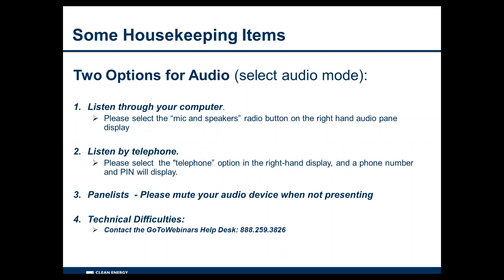Before we begin, I'll quickly go over some of the webinar features. For audio, you have two options: you may either listen through your computer or over the telephone. If you choose to listen through your computer, please select the mic and speakers option in the audio pane — doing so will eliminate feedback and echo. If you choose to dial in by phone, please select the telephone option and a box will display the telephone number and audio pin. If anyone is having technical difficulties, you may connect to the GoToWebinars Help Desk at 888-259-3826.